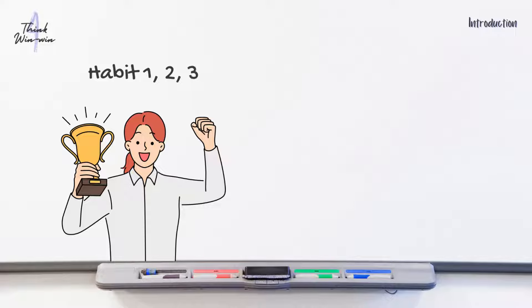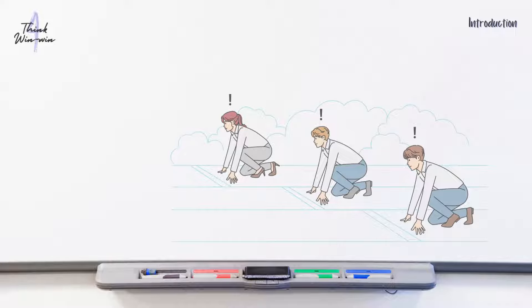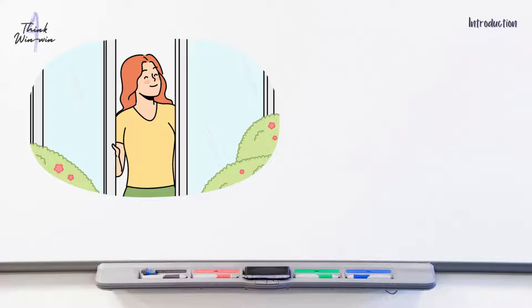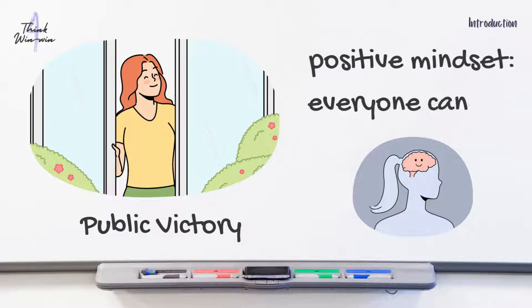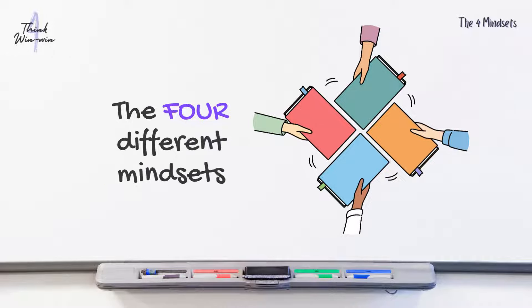In the previous three habits, we focused on our private victory, improving ourselves. But Sean reminds us that life is not a competition, so in Habit 4, we open the chapter of public victory, where we embrace a positive mindset that allows everyone to win. But before we do that, let's understand the different paradigms or mindsets.